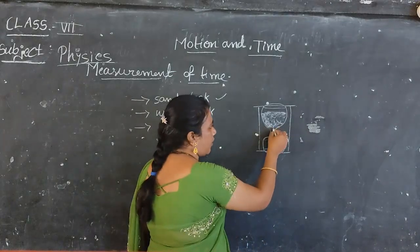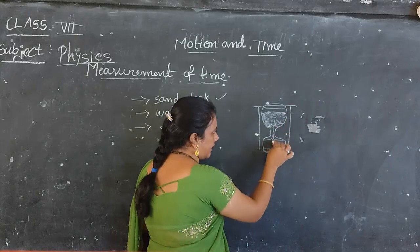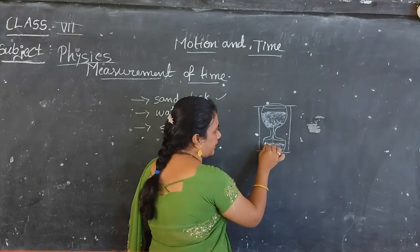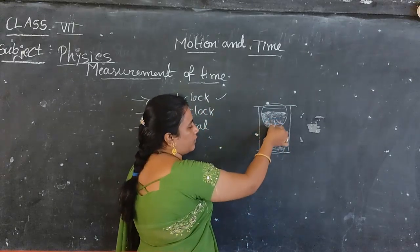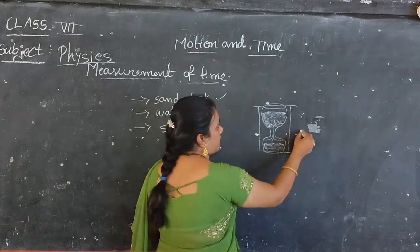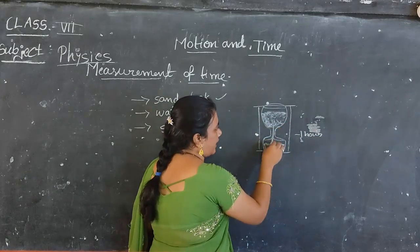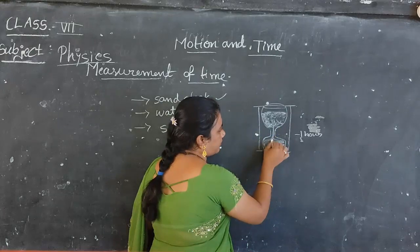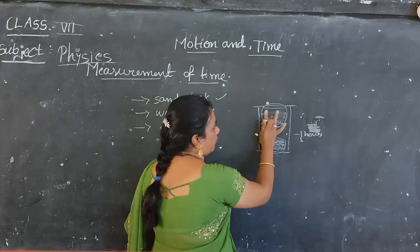Through the small hole, the sand travels from the upper bulb and completely fills the lower bulb. The time taken for this transfer — say, one hour — is how the clock measures time. The sand particles fall from the top bulb to the bottom bulb, and when the upper bulb becomes empty, that represents the measured time period.